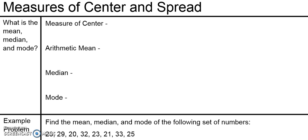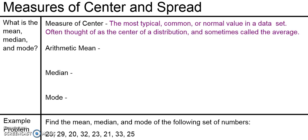So, first off, what is a measure of center? Well, a measure of center is the most typical, common, or normal value in a data set. It's often thought of as the center of a distribution, and sometimes it's called the average.